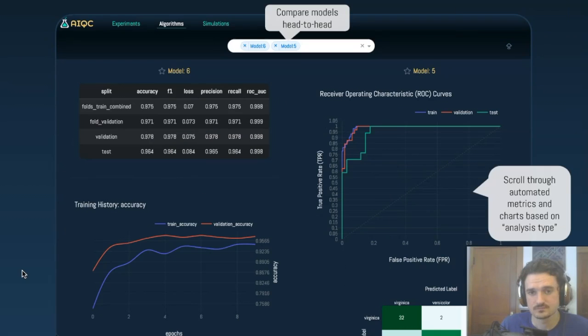Taking a look at the next tab in the user interface, it's model performance. You can compare models head-to-head to really dig into any biases that they may have or areas where they accelerate or outperform each other. You've got automated metrics and charts for every split and or fold of every model that you've trained, which makes it really easy to figure out what's the best model and where does one have certain biases or accelerate over the other one. This is a classification analysis, so all the plots are related to interpreting classification analysis.